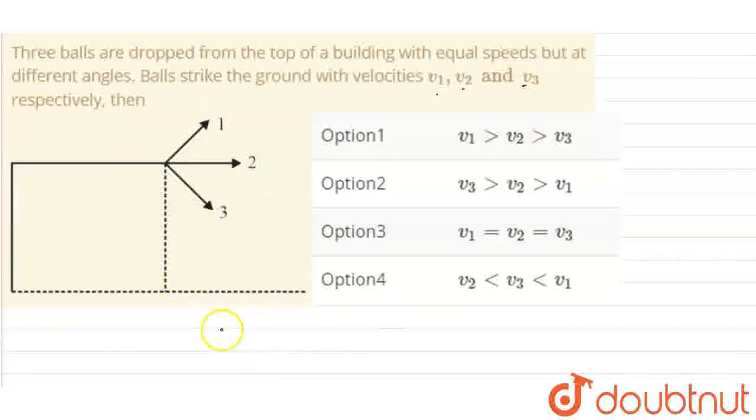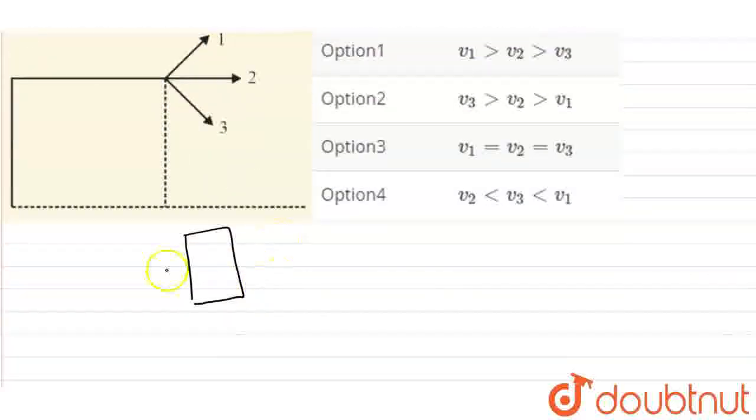Let us suppose that our building has a height h. Here we are dropping a ball which strikes the ground with velocity v.